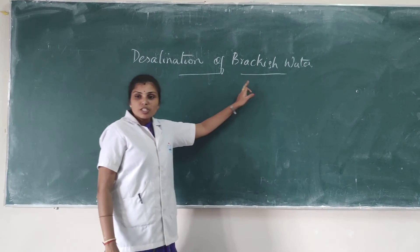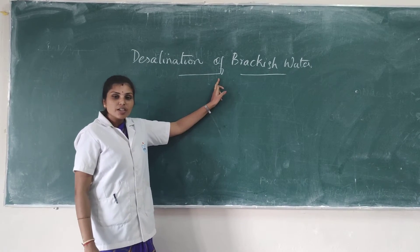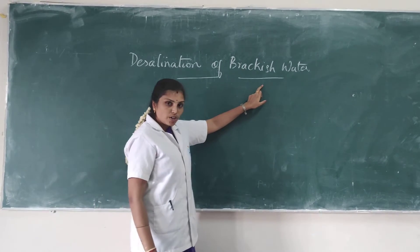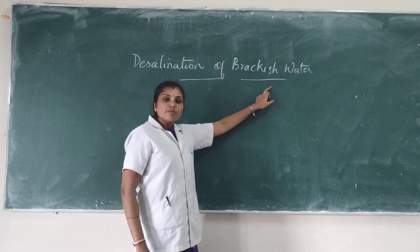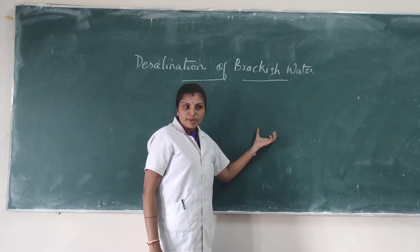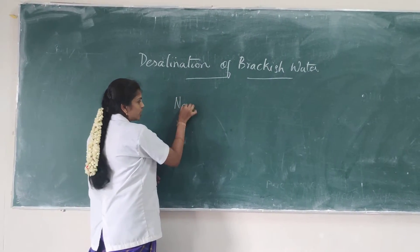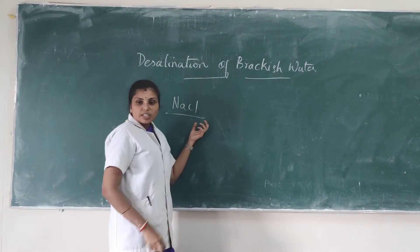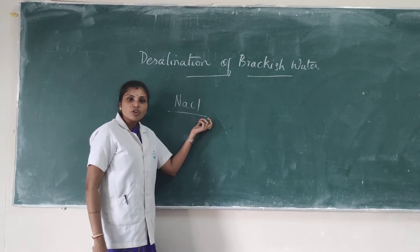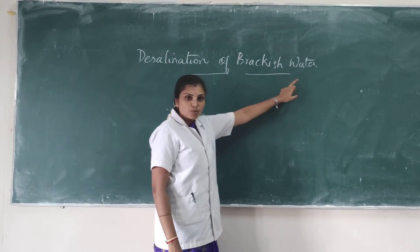This process involves the conversion or removal of salt content from brackish water. Brackish water is nothing but water which contains a large amount of common salt, which is sodium chloride. The water consisting of a large amount of common salt is called brackish water.